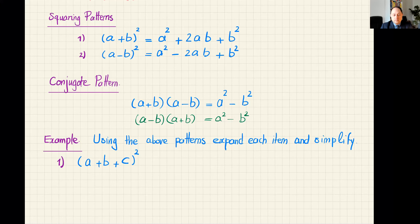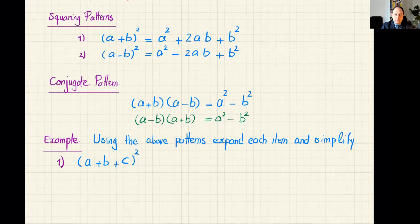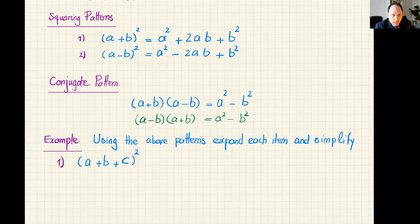A student guesses it might be a² + b² + c² + 2abc, but I want you to understand that you cannot just guess, because mathematics is unforgiving. This formula is 100% correct for its specific form, and you cannot draw an analogy without a rigorous proof. My question is: can you modify this slightly so that you can use the same squaring pattern for three numbers?